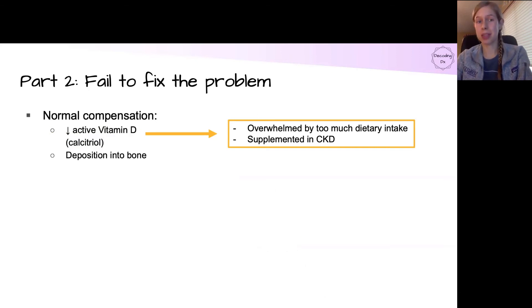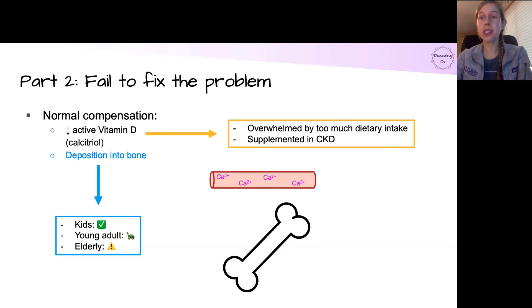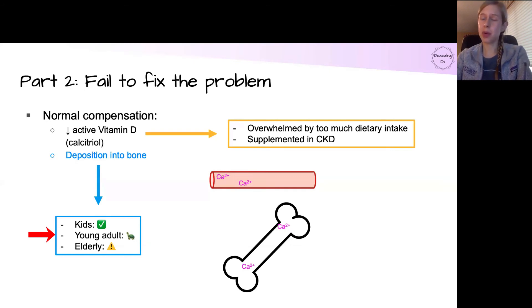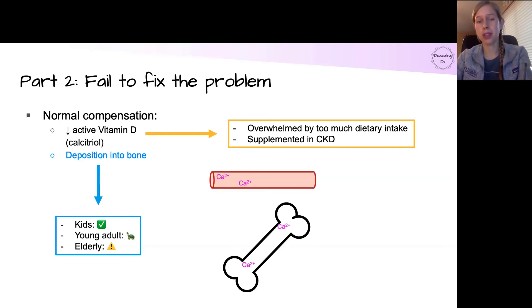The second major compensatory mechanism is deposition of excess calcium into bone. This works really well in kids, who have actively growing bones with net building at baseline — we rarely see calcium alkali syndrome in children. In younger adults, bone turnover is near net zero, so buffering is slower but still present. In elderly adults, however, the net movement is calcium out of bone due to osteoporosis and osteopenia, making bone deposition a significantly less effective compensatory mechanism.